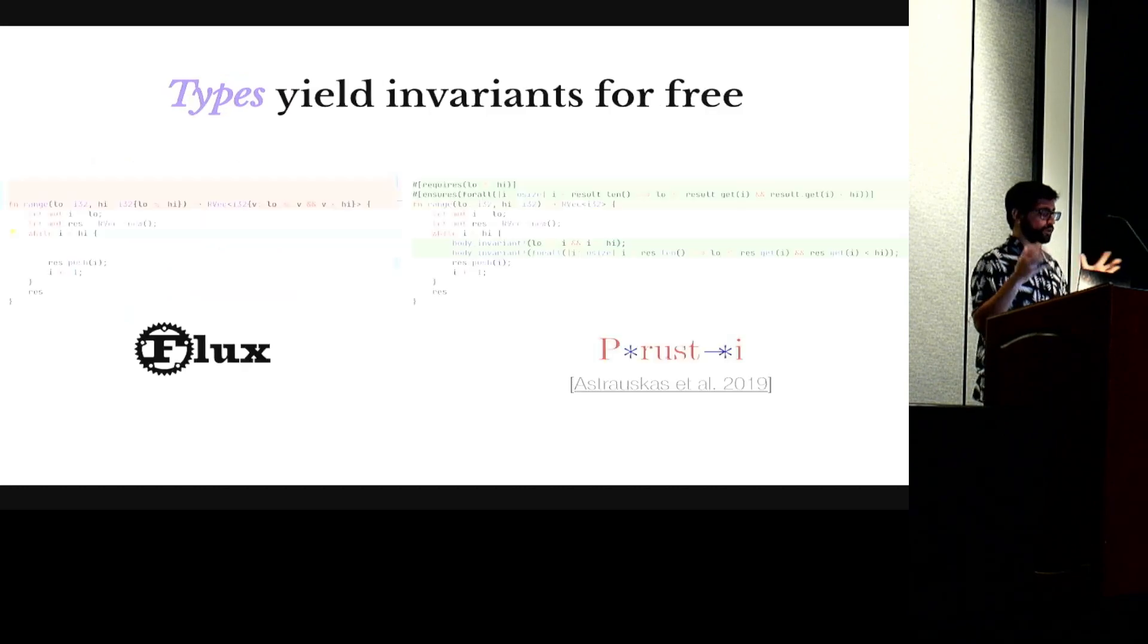And this is one of the main advantages of our type based approach. Because this is not true for other types of tools. So for example here I'm showing a comparison between Flux and Prousty, which is a state of the art verifier for Rust that is based on program logic. And if we try to verify the same code in Prousty we will have to manually annotate the loop with a body invariant. And in this case the invariant is not trivial. It's a quantifying invariant over the vector. And in Flux we don't need to do it. The system can infer it automatically.